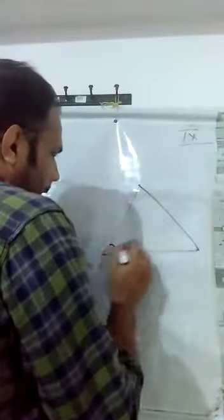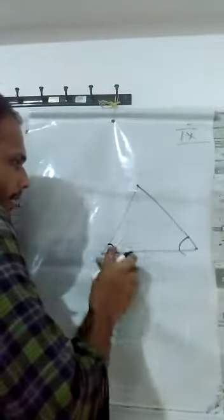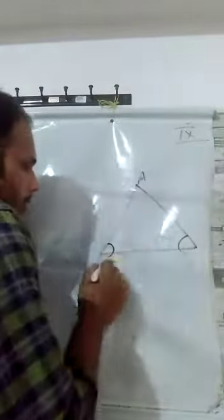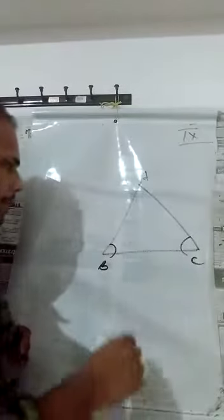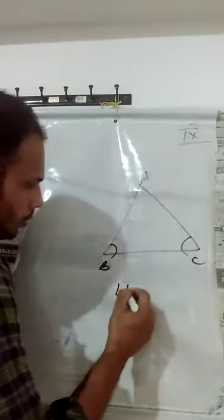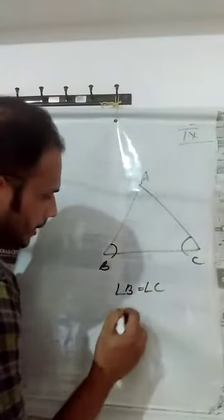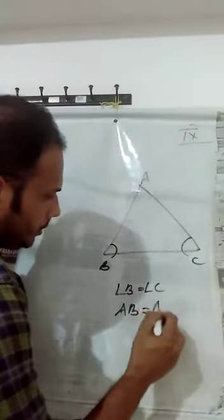That is, the sides oppose the equal angles. Equal angles are opposed to the sides. Equal angles means here if angle B equals angle C, then AB equals AC.